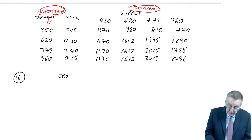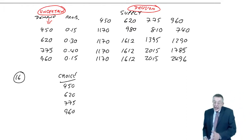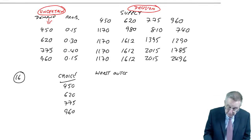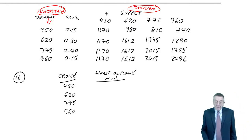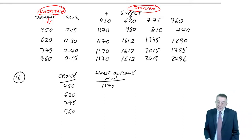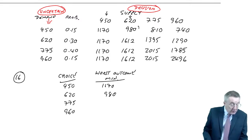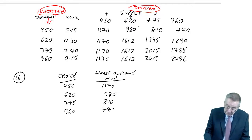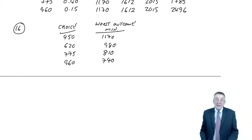For each choice, remember you can ask him to supply 450, 620, 775 or 960. In each case, we look at the worst outcome or the minimum. So if he supplies 450, the outcome is going to be 1170, whatever happens. On the other hand, if he makes 620 meals, the worst outcome is a profit or payoff of 980. If he chooses 775, the worst outcome is 810. If he supplies 960, it's 740.